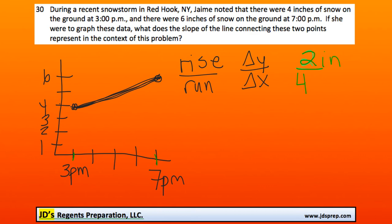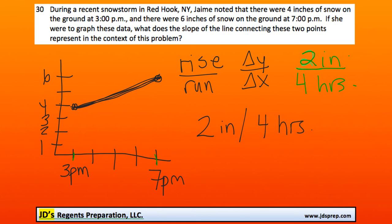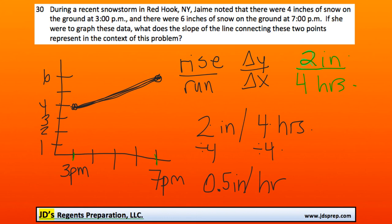Including our units, this is two inches in four hours. In a question like this, they typically prefer that you put it into a unit rate — instead of writing it as two inches per four hours, it's better to write the amount of inches snowing per one hour. To do that, we divide both numbers by four: 4 divided by 4 gives one hour, and 2 divided by 4 gives one half, or 0.5 inches. So this is the unit rate of how much it's been snowing.